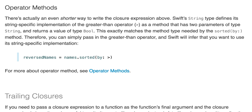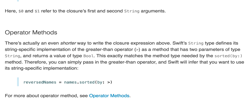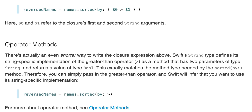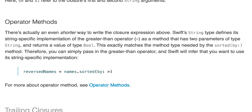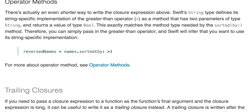Operator methods: There's actually an even shorter way to write this — just write (by: >) using the greater than operator. That means we're going to have two parameters and we're comparing them using the greater than sign. Swift will infer that you want to use its string-specific implementation, and you can match the sorted(by:) call. So that's an operator method.